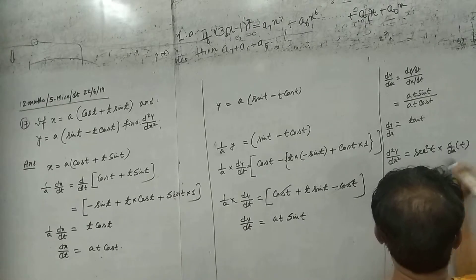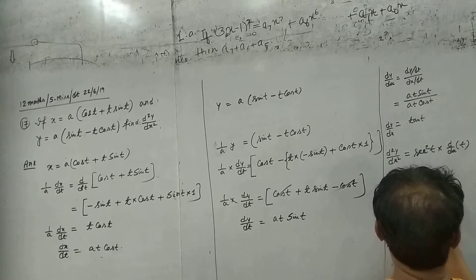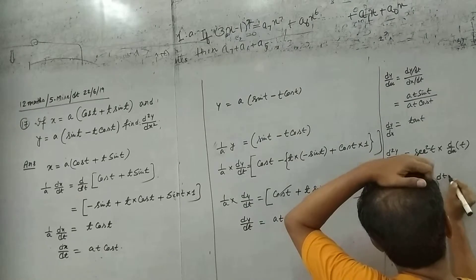D by Dx, T, and center square T. A into DT upon Dx.